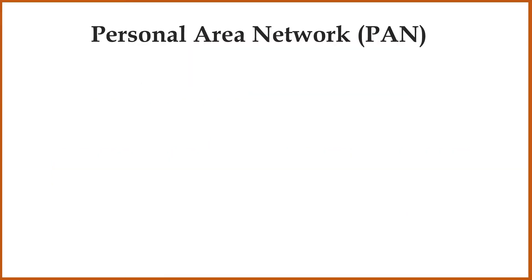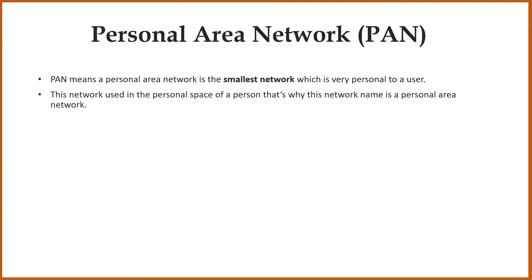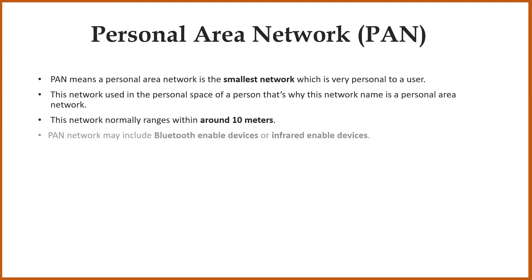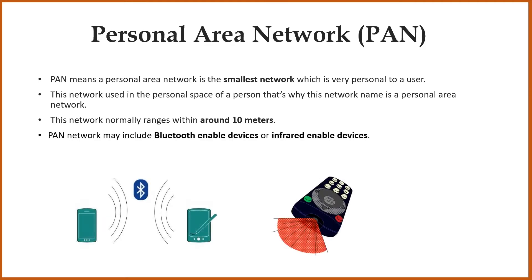Let's first discuss the personal area network. As the name suggests, this network is used in our personal space. It is the smallest network which is very personal to a user. This network is used in the personal space of a person, that's why this network is named personal area network. This network normally ranges within around 10 meters. PAN networks may include Bluetooth enabled devices or infrared enabled devices. So when we connect two devices using Bluetooth for data transfer, then we create a network in our personal space.